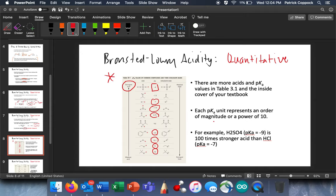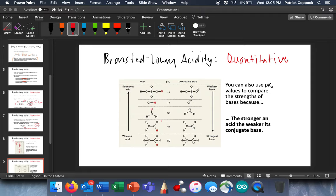Each pKa unit represents an order of magnitude or a power of 10. So if it turns out sulfuric acid, can you see it's minus nine and HCl is minus seven? That means sulfuric acid is 100 times stronger of an acid than HCl. But that's so low that we still call that strong. We still call that complete.